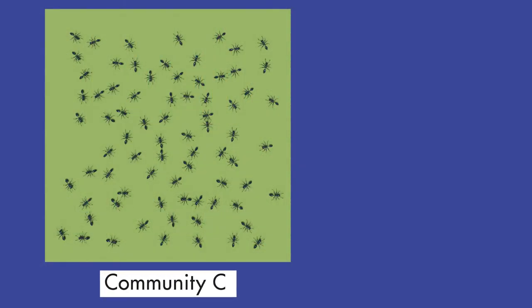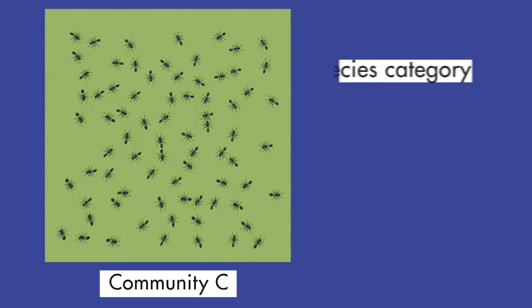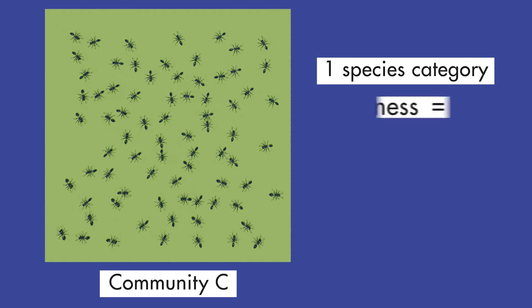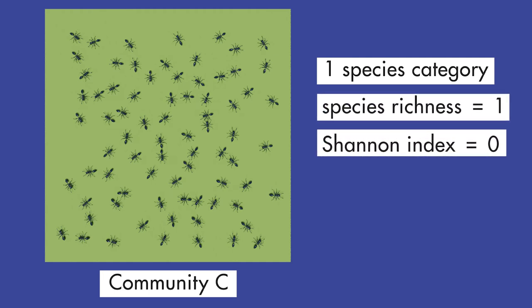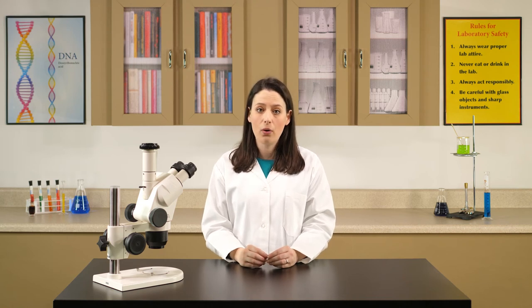Biodiversity is the variety of organisms living in an area. If organisms in only one species category live in a community, that community has no variety and therefore no biodiversity. In this example, community C has 76 organisms, all in one species category, so its species richness is 1 and its Shannon Index is 0.